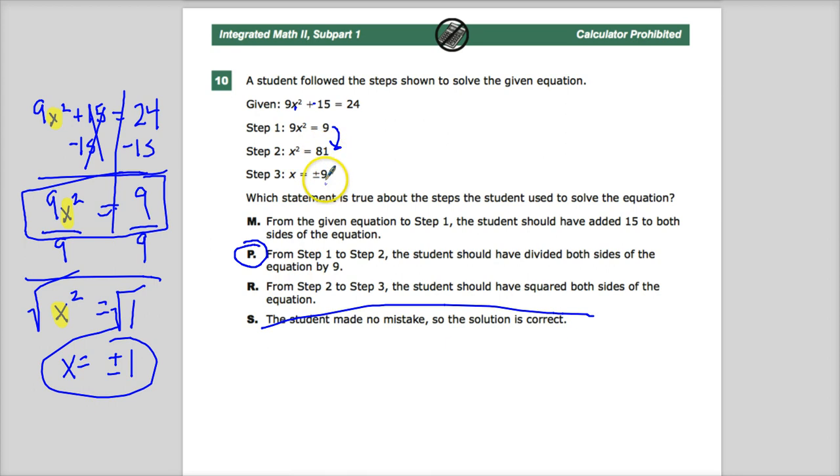Step 2 to step 3? No, based on what they did, other than this mistake, you take the square root, square root of 81 is plus minus 9, so that one's good. From given equation to step 1, the student should have added 15. Well, that doesn't eliminate 15, so that one's out. So that justifies our answer of P.